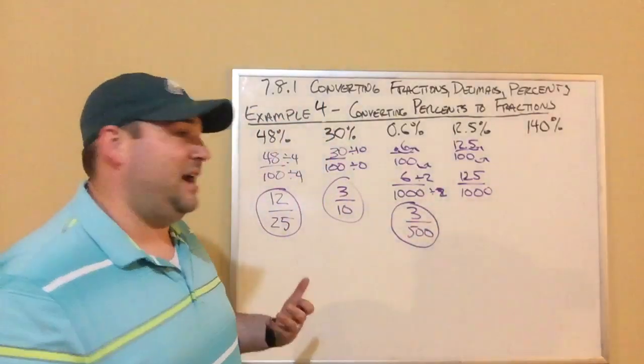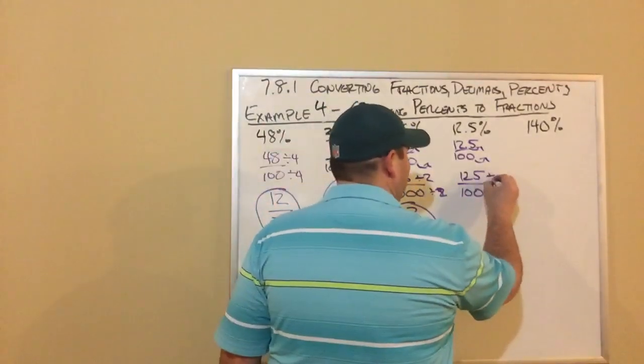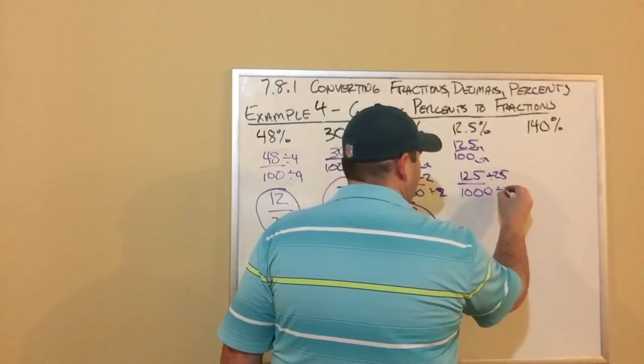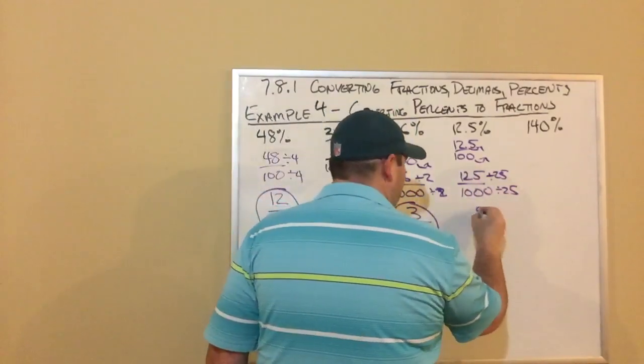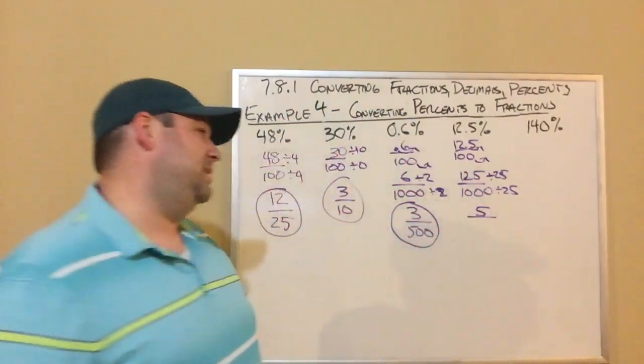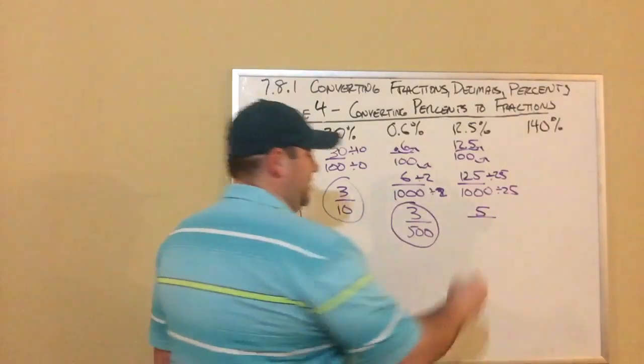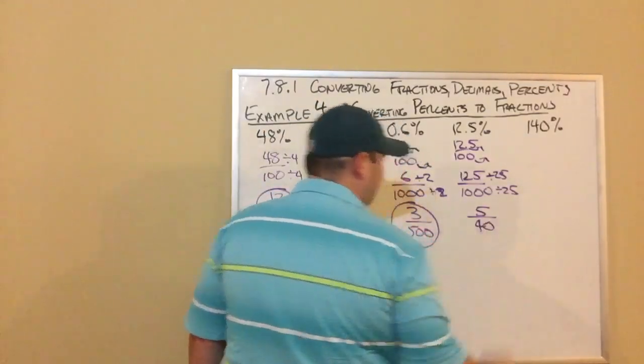I look at that - I know 5 goes into both, 25 definitely goes into both. So I can divide both by 25. And I do that, I know 125 divided by 25 would be 5, and 1000 divided by 25 is 40. I got 5 over 40.